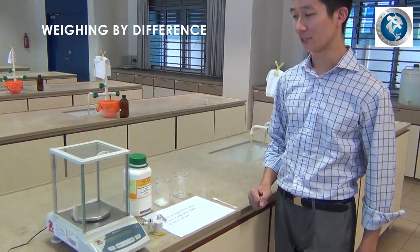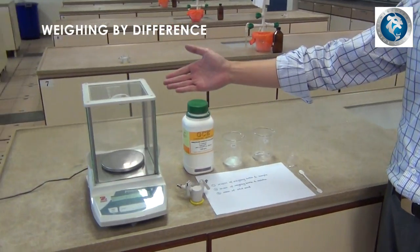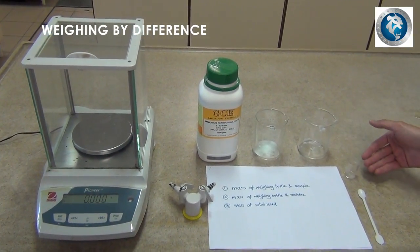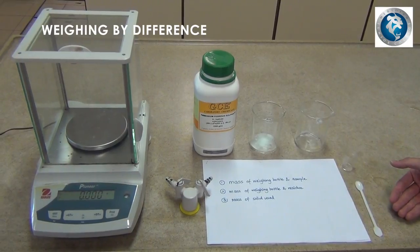So what are the apparatus that you need? A weighing balance, a waste beaker, a clean beaker, a weighing bottle that is clean and dry, and a clean spatula.